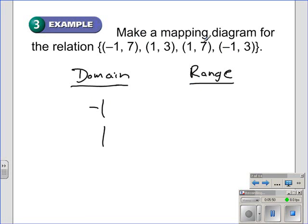We can see we have another one here and a negative one. So we list that out once apiece, negative one and one. We list out all of the different range values. We have seven, three, seven, and three.